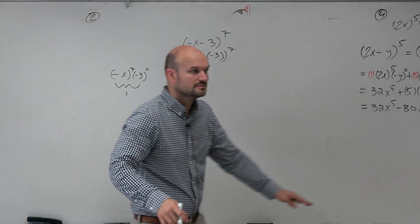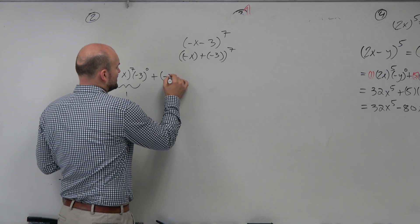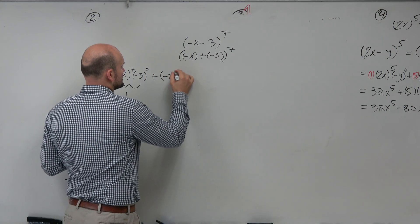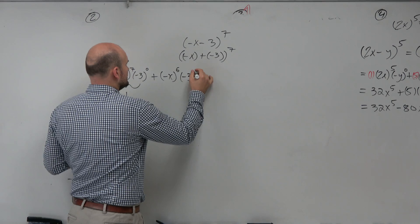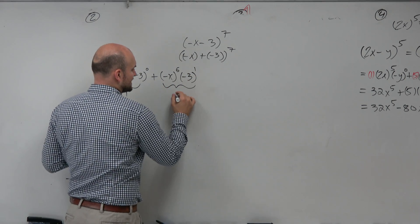Do you guys kind of see the pattern there? So then the second term would be negative x to the 6th, negative 3 to the 1st. That's the second term in the expansion.